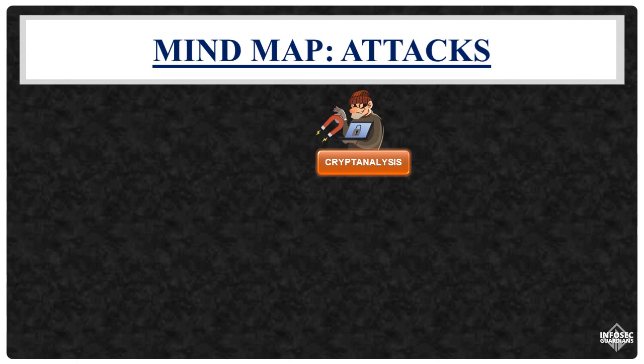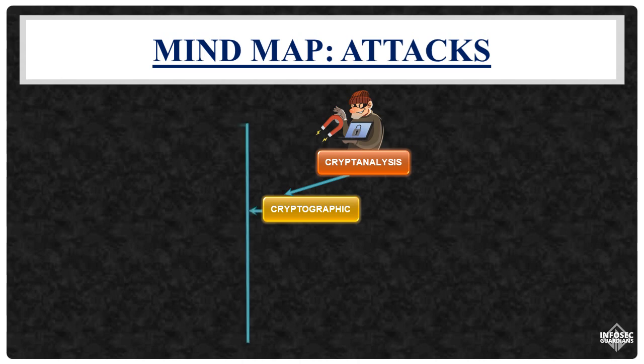Cryptographic attacks and cryptanalytic attacks are the two main categories within the field of cryptanalysis. These categories represent different approaches to analyzing and compromising cryptographic systems. Cryptographic attacks encompass a broad range of attacks that aim to exploit vulnerabilities or weaknesses in cryptographic systems. Cryptographic attacks may target the implementation of algorithms, protocols, or applications to find weaknesses that can be exploited.